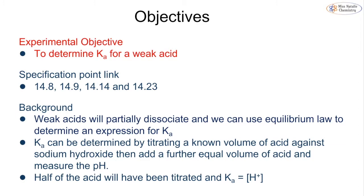Weak acids, when they are aqueous, are going to partially dissociate. So we can use our equilibrium law in order to determine an expression for Ka. And we can determine Ka by titrating a known volume of acid against sodium hydroxide, and then add a further equal volume of acid and measure the pH. Half of the acid will have been titrated, and Ka is therefore equal to the concentration of hydrogen ions.